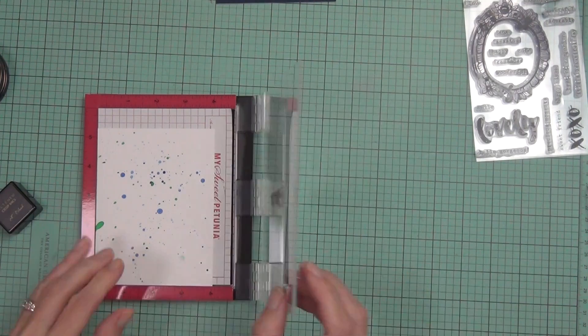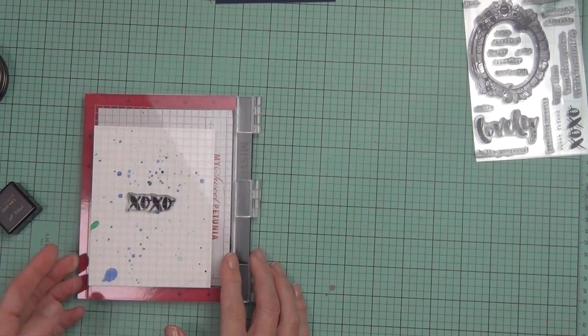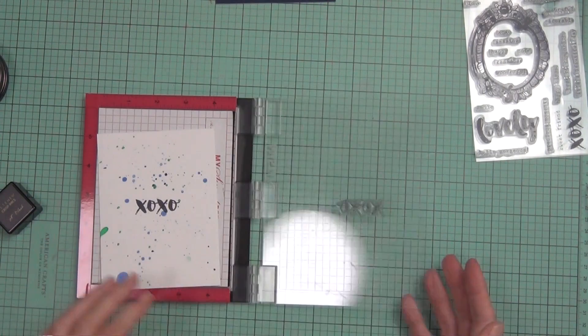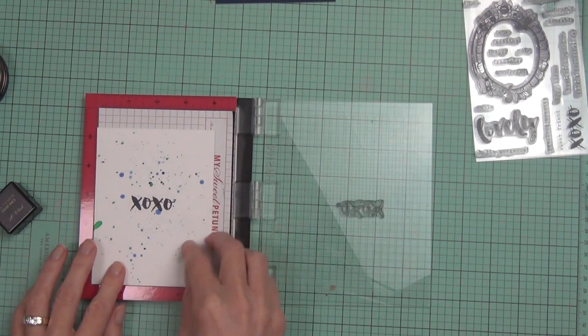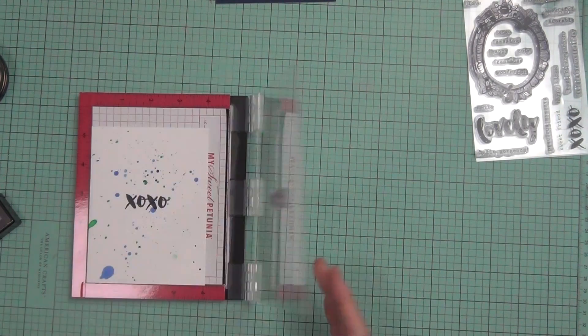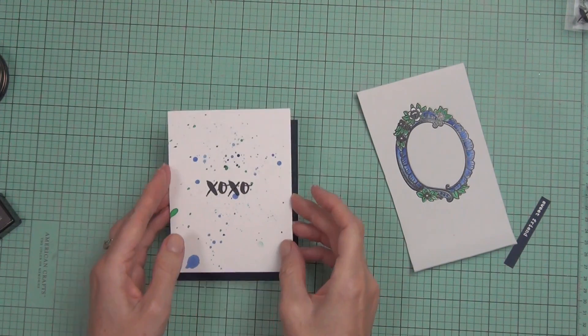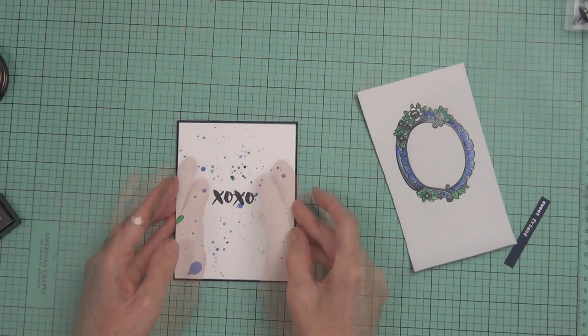I've got the XOXO out of the same stamp set, and I'm just stamping that in black on my spattered background. I did have to stamp that out a couple of times because this is on the Bristol smooth and it's also got that flicky background that I created.